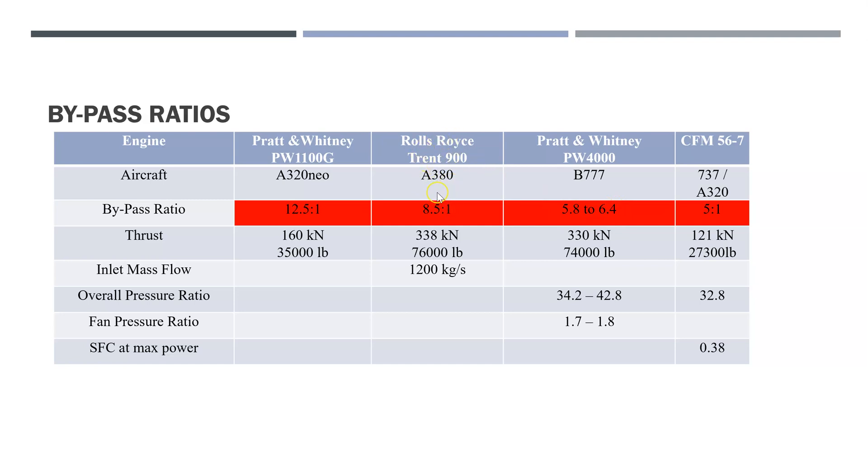The A380 has a bypass ratio of 8.5:1. And now the A320neo, so if we compare the old A320 to the new engine option, it has a bypass ratio of 12.5:1, so we've got a bigger bypass ratio.